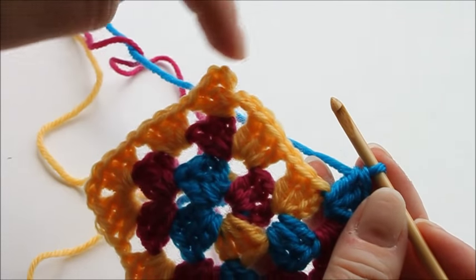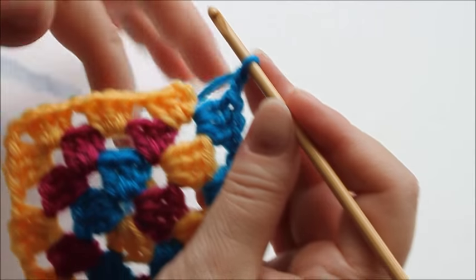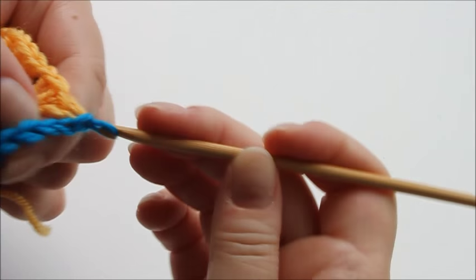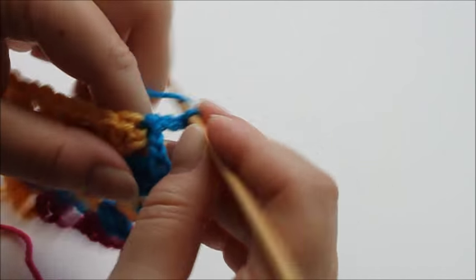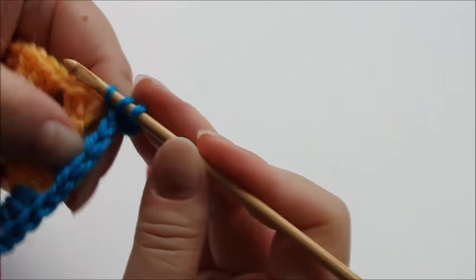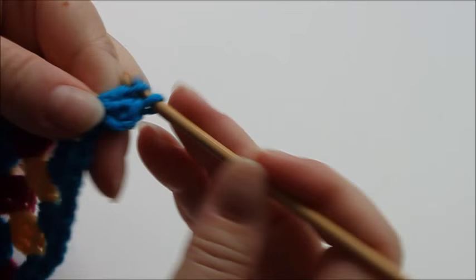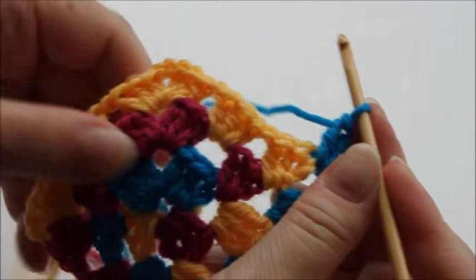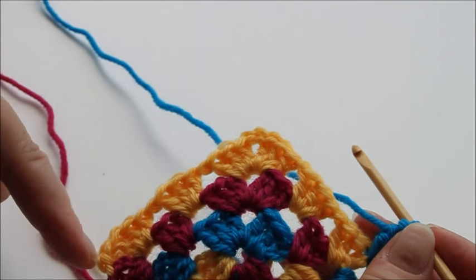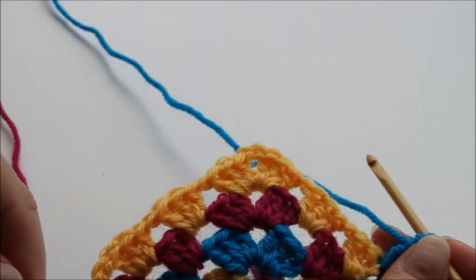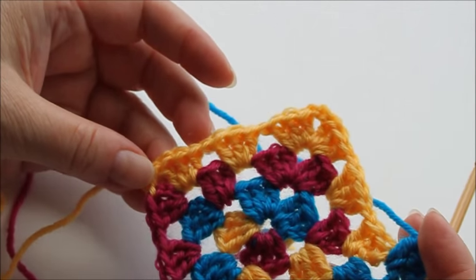And when I get to the end of this row, I'll again continue with the blue. So here I am. Slip stitch, chain three, and two trebles into the same corner. And now there's a longer way to go because the next change of color is only here. So I'll continue with this now just the same way, and then I'll show you when it's much bigger.